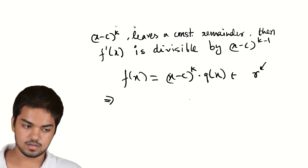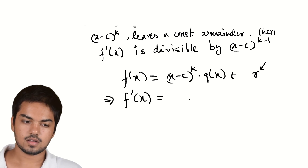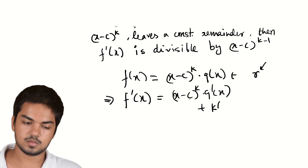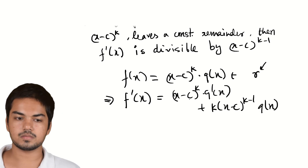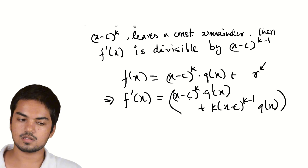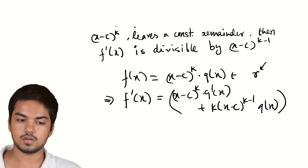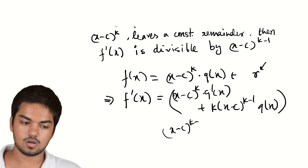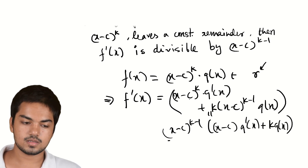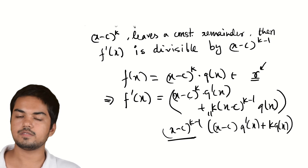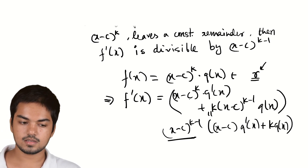When I take the derivative, I get f'(x) = (x−c)^k · q'(x) + k·(x−c)^(k−1)·q(x). This part is clearly divisible by (x−c)^(k−1). I can factor out (x−c)^(k−1) to get (x−c)·q'(x) + k·q(x). And r is a constant, so when we differentiate it, it vanishes. So f'(x) is divisible by (x−c)^(k−1).